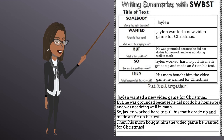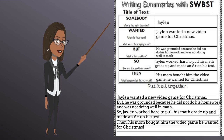Next, let's answer the question for But — what is the problem? The problem is Jalen was grounded because he did not complete his homework assignment and he was not doing well in math. Next, let's answer the question for So — how was the problem solved? Jalen worked hard to pull his math grade up and made an A-plus on his test. Finally, we will answer the question for Then — what happened at the very end? His mom bought him the video game he wanted for Christmas.